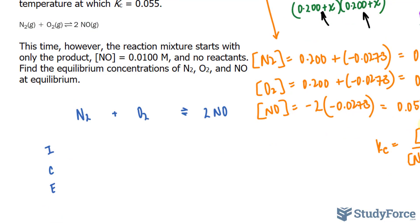We've been given the initial concentration of NO, so I'll write in here 0.0100, and since the question tells us that only the product exists at the beginning, we can have 0 as the initial concentration for these two molecules. We are looking for the equilibrium concentration here, here, and here.